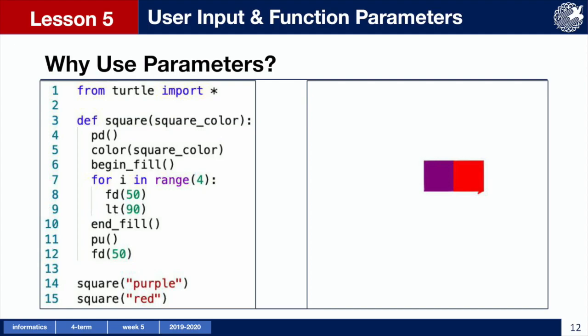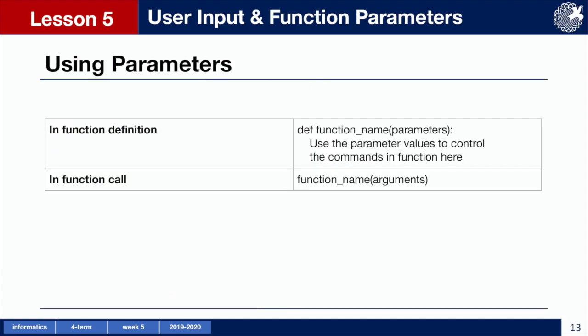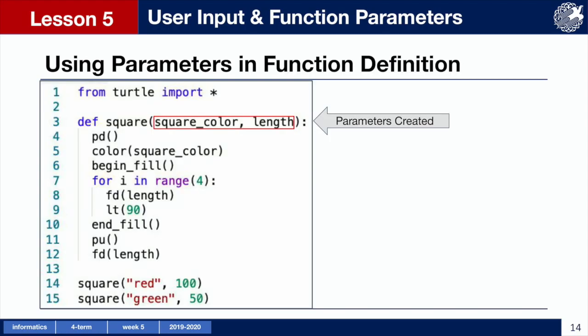Let's take a deeper look into how parameters are created and used. To use a parameter you must first include its name in the function definition. The name you give the parameter, such as squareColor, must be the same name placed throughout your function commands wherever you want to use that value. When calling a function, if the function requires any parameters you have to include the arguments or parameter values between the parentheses. You can use as many parameters as you want, but make sure that when calling the function you enter an argument for each parameter. Also don't forget about their order. In this code we have a function called square that takes two parameters: squareColor and length.